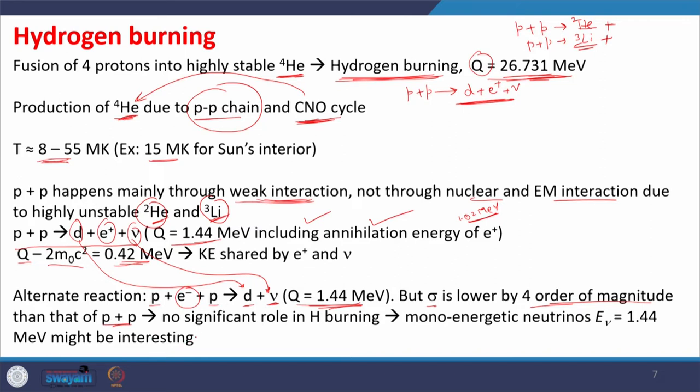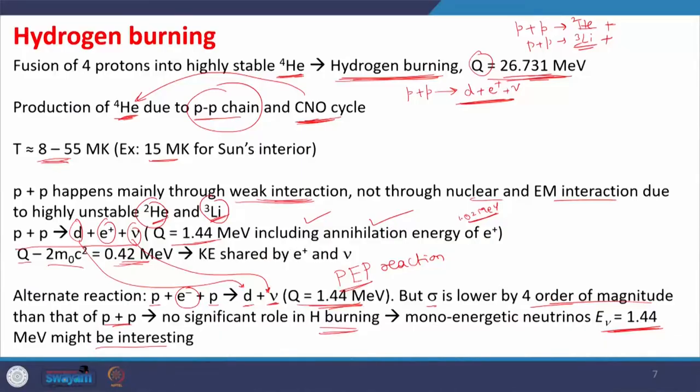Another possible reaction is the proton-electron-proton (PEP) reaction: p + e⁻ + p → deuterium + neutrino, with the same Q value of 1.44 MeV, but the cross section is lower by 4 orders of magnitude compared to the p+p reaction, so it has no significant role in hydrogen burning. However, an interesting feature is that this PEP reaction emits mono-energetic neutrinos at 1.44 MeV, which might be useful for neutrino detection from the sun.